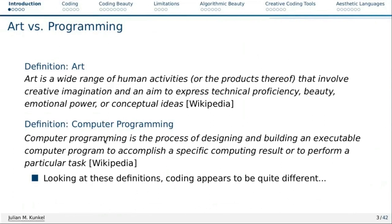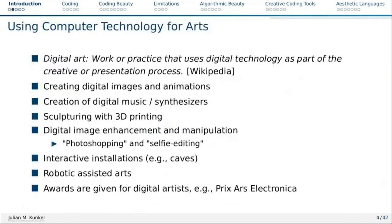However, what I want to convince you as part of this talk is that there is a lot of analogy between those things. Can we use computer technology for arts? Of course. Digital art, for instance, is a work of practice that uses digital technology as part of the creative or presenting process. You create digital images, music, 3D printed sculptures, digital image enhancement — aka photoshopping — interactive installations, and robotic-assisted arts. And for those digital arts, you can actually get awards, which means they are recognized by at least a set of people.